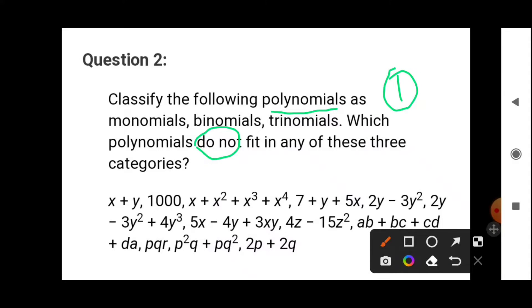Binomial: bi means two. Binomial means an algebraic expression having two terms. Similarly, if an algebraic expression has three terms, then it is called trinomial.